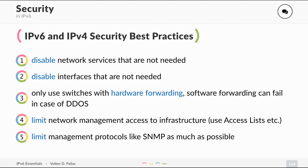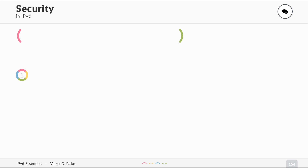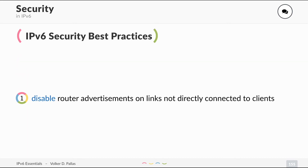Using SNMP you cannot only read all of the configuration of the device, you can also set most of it. These best practices apply to both IPv4 and IPv6, and you should take care of them if you want to run a secure network. For IPv6 especially, you should disable router advertisements on links that are not directly connected to client networks.